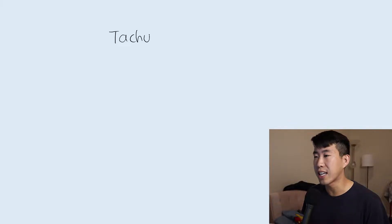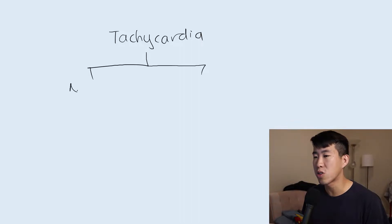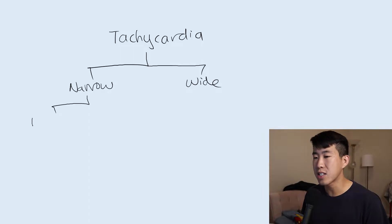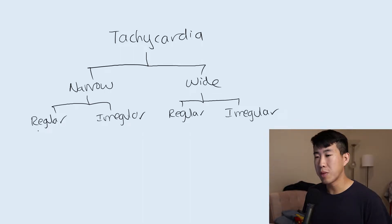Let's start with the framework for evaluating tachycardia in general. A good one I like to use is first asking: is this a narrow complex tachycardia or is this a wide complex tachycardia? The next step is to ask: is this regular in terms of its rhythm or is it irregular? And the same thing applies for a wide complex tachycardia. Immediately, just based off this classification, you can start forming a good differential diagnosis.